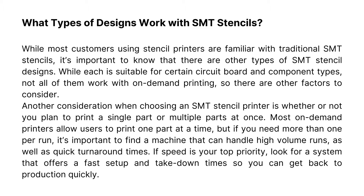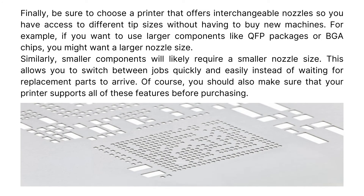If speed is your top priority, look for a system that offers fast setup and takedown time so you can get back to production quickly. Be sure to choose a printer that offers interchangeable nozzles so you have access to different tip sizes without having to buy new machines. For example, if you want to use larger components like QFP packages or BGA chips, you might want a larger nozzle size. Similarly, smaller components will likely require a smaller nozzle size. This allows you to switch between jobs quickly and easily. Make sure that your printer supports all of these features before purchasing.